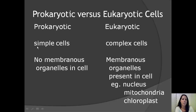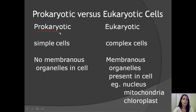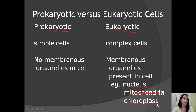Now moving on to our third key idea: prokaryotic versus eukaryotic cells. As more and more cells were discovered, scientists needed a way to sort all the cells, so they created a classification system based on how complex the cell was. Simple cells with no membrane-bound organelles were called prokaryotic. Complex cells with membrane-bound organelles were called eukaryotic. Examples of membrane-bound structures found in the eukaryotic cell include the nucleus, mitochondria, and the chloroplast.